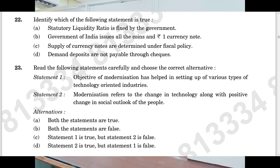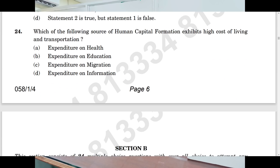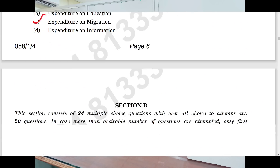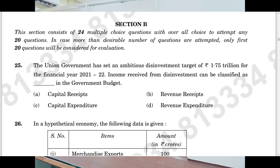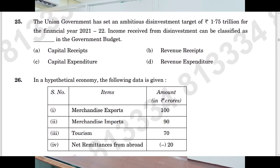Question number twenty-two: B. Question number twenty-three: A. Question number twenty-four: C. Next, section B is coming. Question number twenty-five: A.